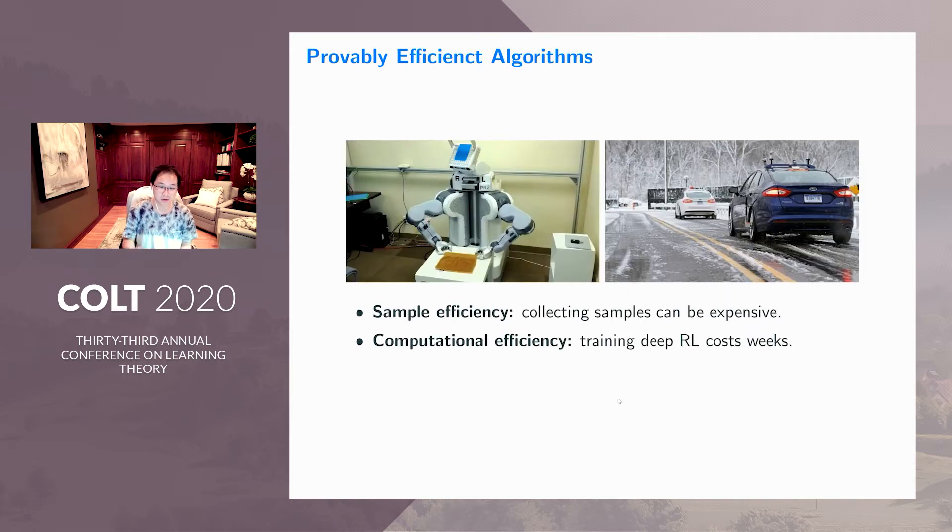First, what is a provably efficient algorithm? By efficient, we mean two kinds of efficiency. The first one is sample efficiency. Imagine in robotics scenarios, you want a robot to learn how to fold towels, and it can take a very long time, like 20 minutes to fold one towel—then you can collect just one sample. In a second scenario, like autonomous driving, you have a car doing autonomous driving, and you don't want it to crash. Otherwise, you're going to pay a lot of money for this crash. In both scenarios, collecting samples can be very expensive, either time consuming or costly. So we want to design efficient algorithms that use as few samples as possible.